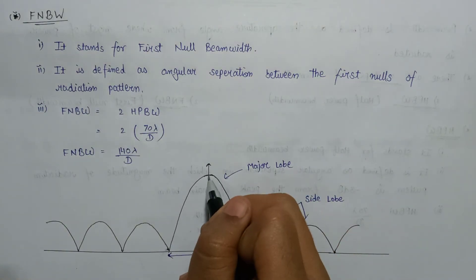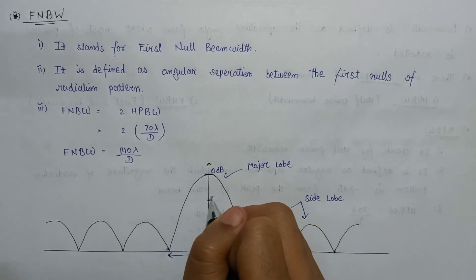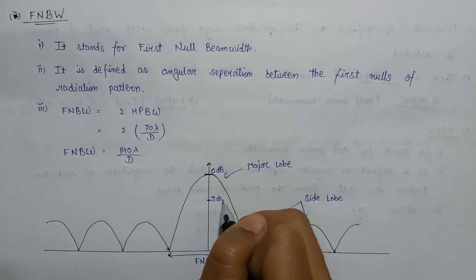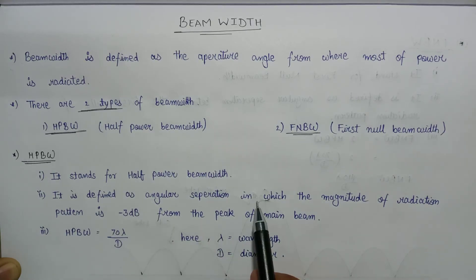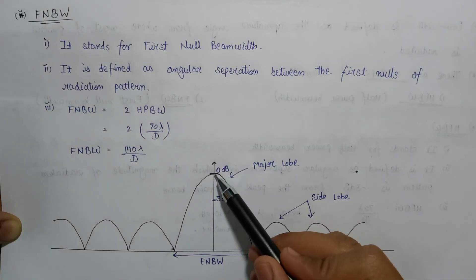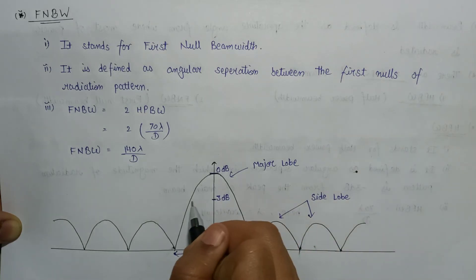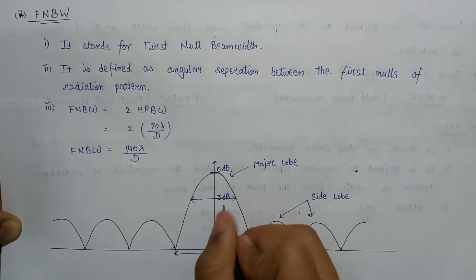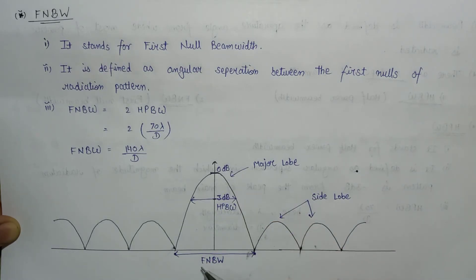Let's consider this point as 0 dB, and this point comes out to be minus 3 dB. For the half power beam width, according to its definition, it is the angular separation in which the magnitude of the radiation pattern is minus 3 dB from the peak of the main beam. So here is the peak at 0 dB and here is minus 3 dB, and this angular separation is HPBW. These are the radiation patterns for HPBW and FNBW.